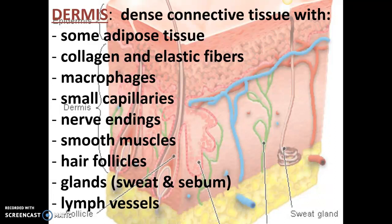Within the dermis, macrophages — white blood cells that can come out and eat, the big eaters — will sneak out of the blood vessel and eat any bacteria that happen to make it through. You have a bunch of small capillaries feeding the base layer of your epidermis, but also feeding everything else in the dermis.